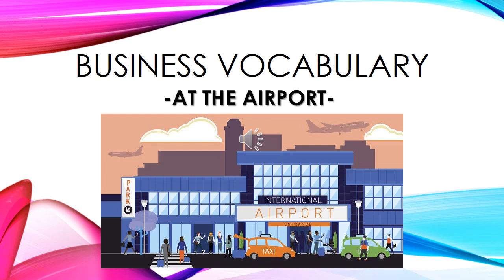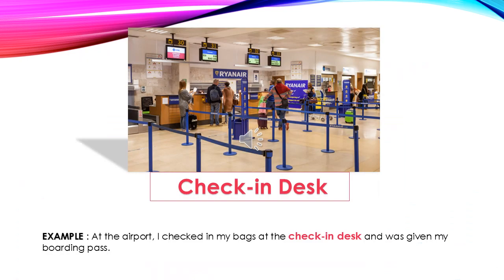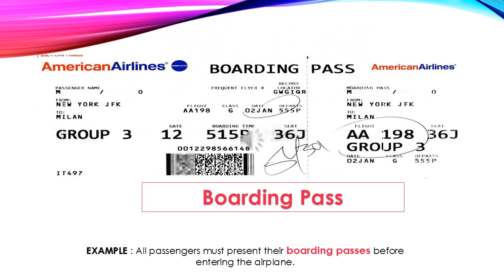Let's get started. The first picture we have is the check-in desk — it's the first thing that you should look for when you get to the airport. Here's an example: 'At the airport, I checked in my bags at the check-in desk and was given my boarding pass.'